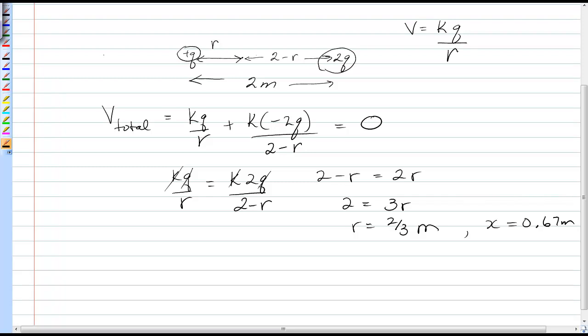Now there is another possible place where this net voltage could be zero, and that's to the left of the small charge. So I'm going to call this r1, and it means the distance to the bigger charge would be 2 plus r1. So now for v total to be zero, I have kq over r1 from the smaller charge plus k negative 2q over 2 plus r1, and that has to be zero.